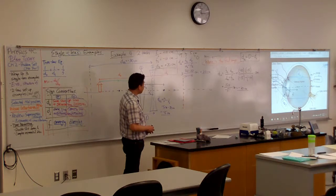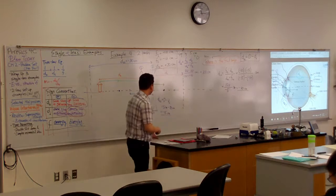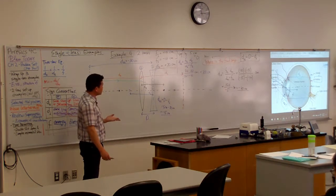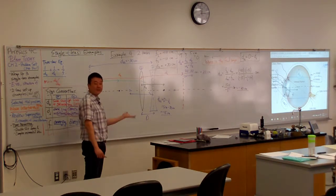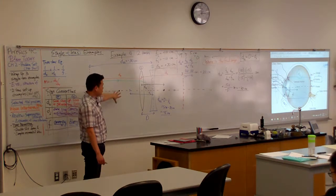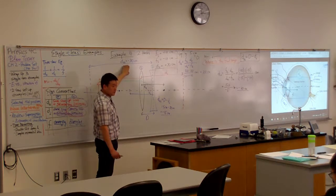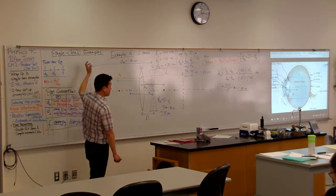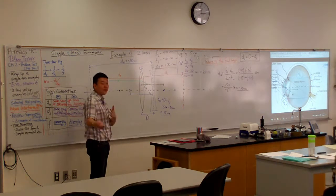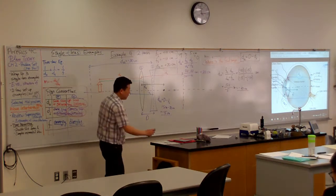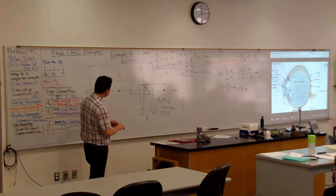Just so you know, ray tracing with a virtual object is not something I would ever ask you to do on an exam. This is something I got excited about when I figured it out for myself, so I just want to show it. You would be expected to do the algebra and figure out the location, and maybe even figure out if it's upright or upside down. But ray tracing with a virtual object is the one thing I won't put on an exam because too many people will miss it. Let me just do the ray tracing as an example.